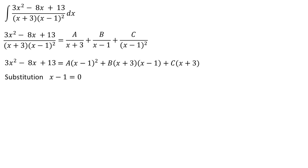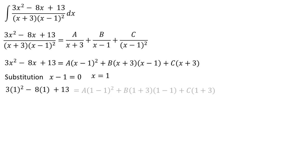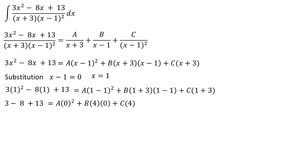Substitution: x - 1 = 0, or x = 1. We get 3(1)² - 8(1) + 13 equals A(1-1)² plus B(1+3)(1-1) plus C(1+3). This gives 3 - 8 + 13 equals A·0 plus B·4·0 plus C·4, so 8 equals 4C, therefore C = 2.